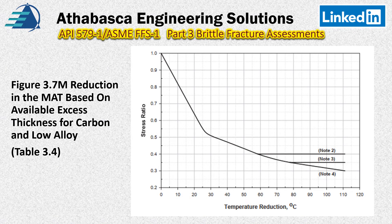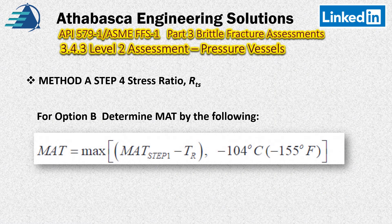Continuing with Figure 3.7, we select the appropriate curve. As discussed in an earlier video, based on our allowable stresses and design code we use the highest curve, which is the 0.4 curve — Step 4, Option B. The MAT is determined by taking the MAT from Step 1 minus the temperature reduction TR, or minus 104°C, whichever is the maximum. If the stress ratio falls at or below 0.4, we use that relationship.